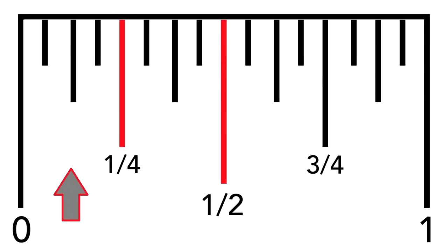Half of 1 fourth is 1 eighth. So, this is 3 eighths. This is 5 eighths. And this is 7 eighths.